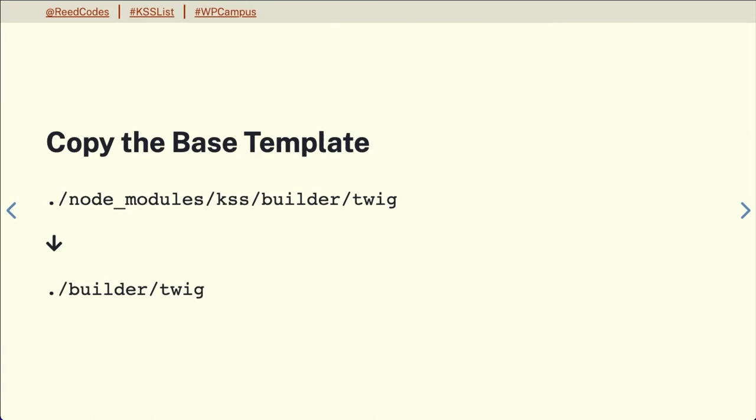In your node modules folder for KSS, it includes several builder directories. Handlebars might be the one a lot of people are using, but because we're in WordPress and we're going to set up Timber for our templating, we're going to copy the twig builder from the KSS folder into our builder folder.